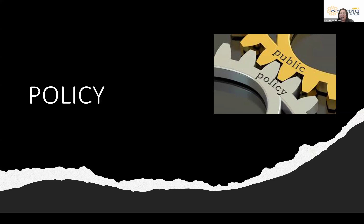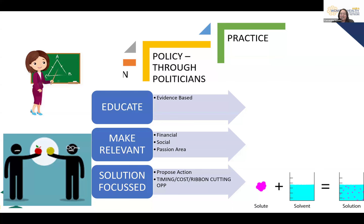This is where the public and policy connect — policy through politicians. We've seen pivotal changes in health, like Jill Hennessy with voluntary dying, driven by a politician with a passion area. If you can get a politician with a passion area, or convince a politician through evidence-based, simply communicated education, make it relevant to them through their passion area or by showing how financial, social, or aligned-group issues connect — don't go into a politician's office with oranges when they want apples.